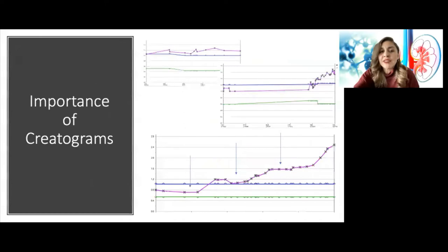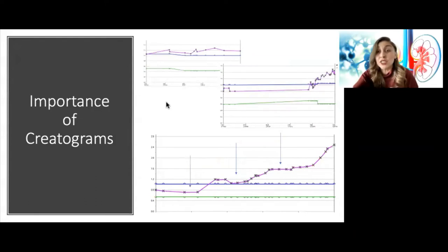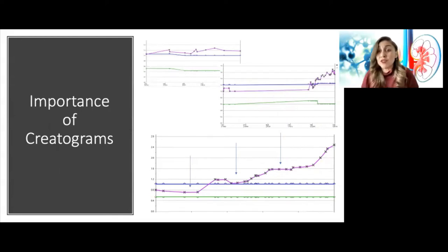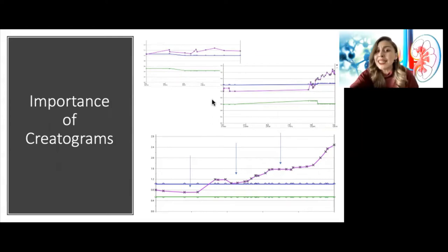I really want to advocate for creatograms. Our electronic medical record has an amazing function to graph creatinines over time, and this is one of the first things I do for any patient I'm seeing — understanding the history of that kidney. You can see that all of these patients have elevated creatinines, but there are three very different stories told. The blue and green lines are the upper and lower limits of normal, and the purple ones are the patient values.